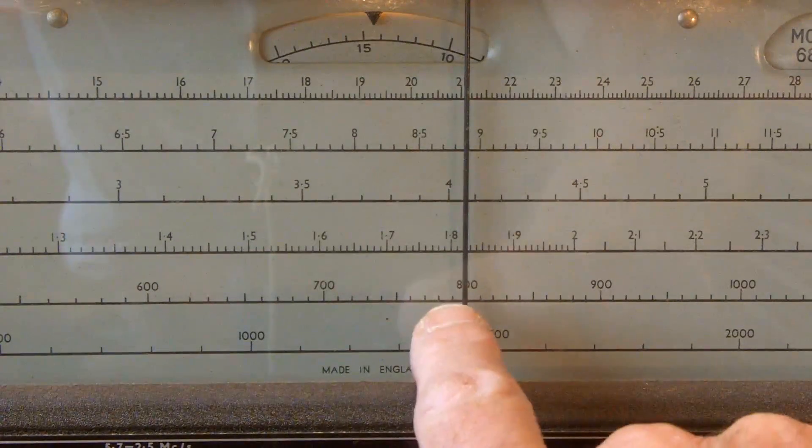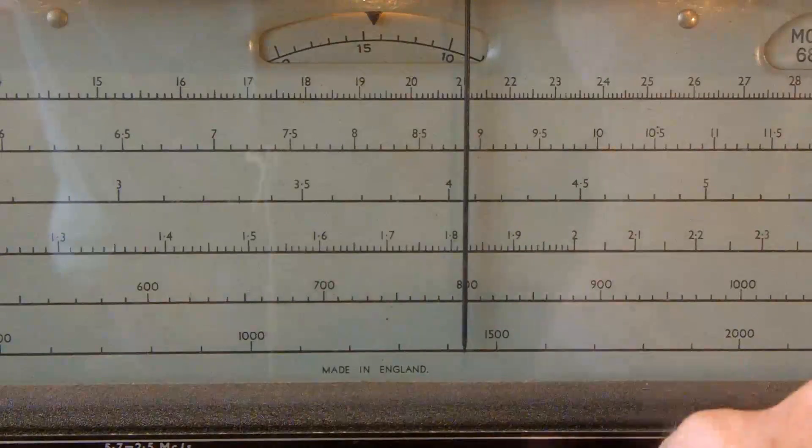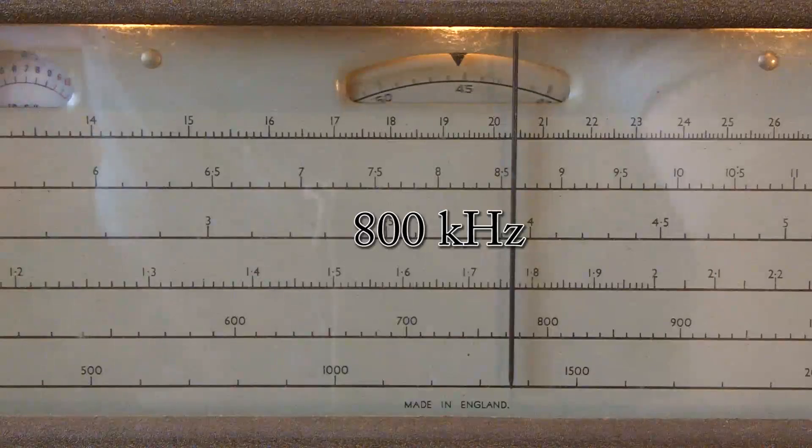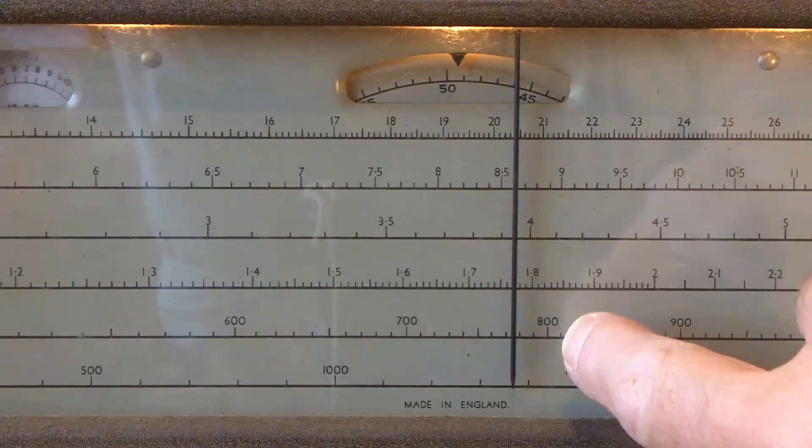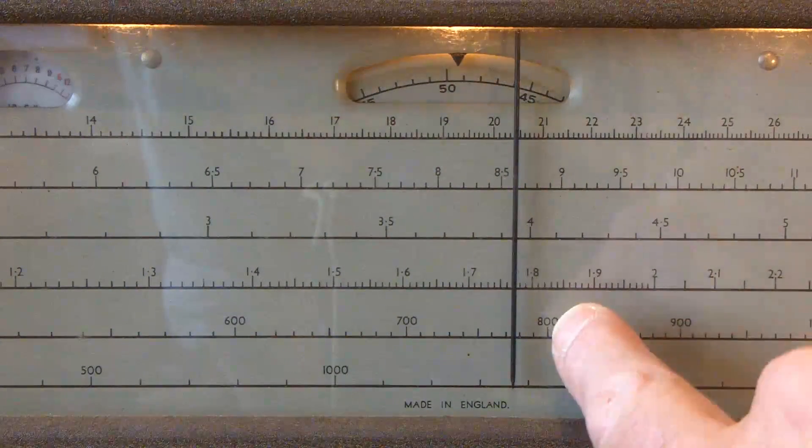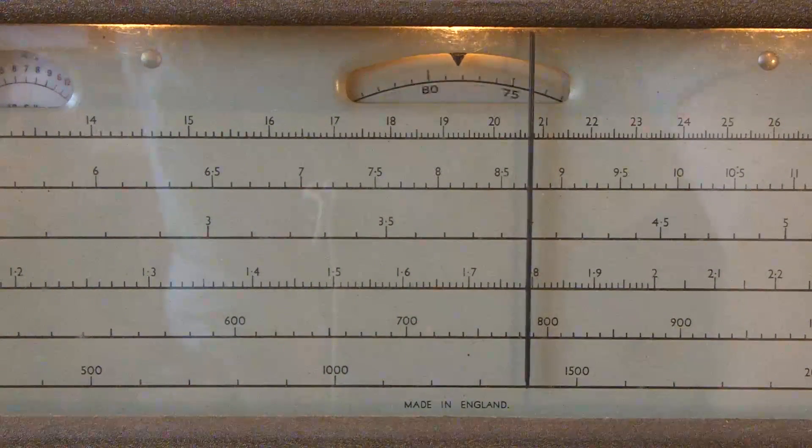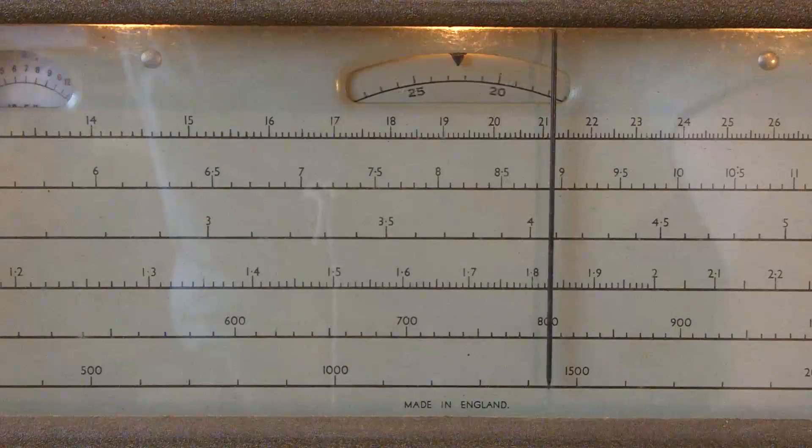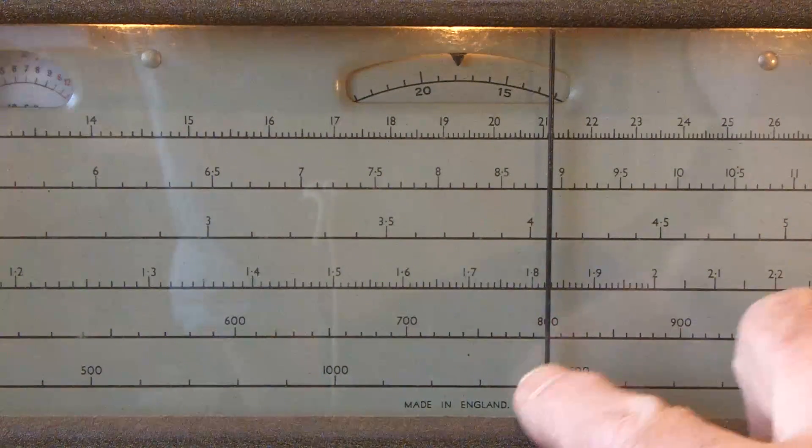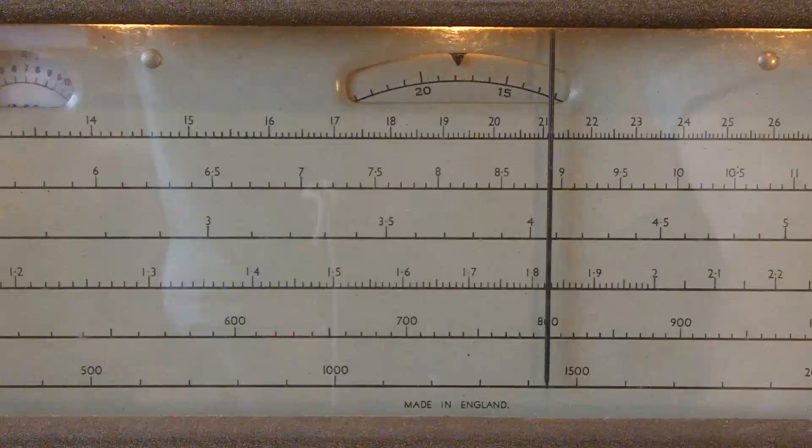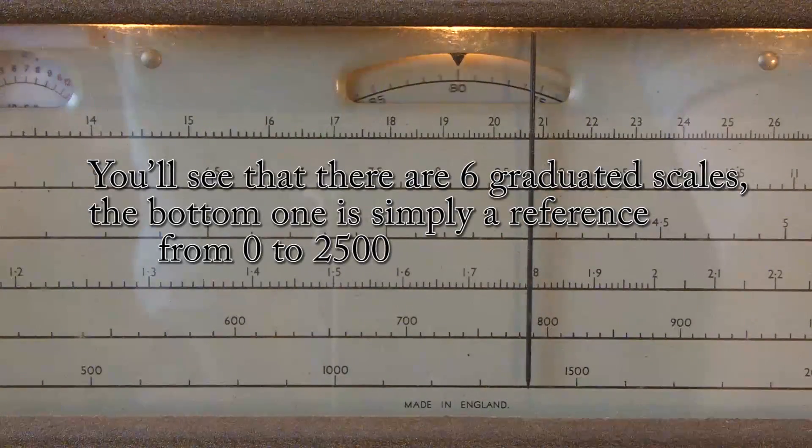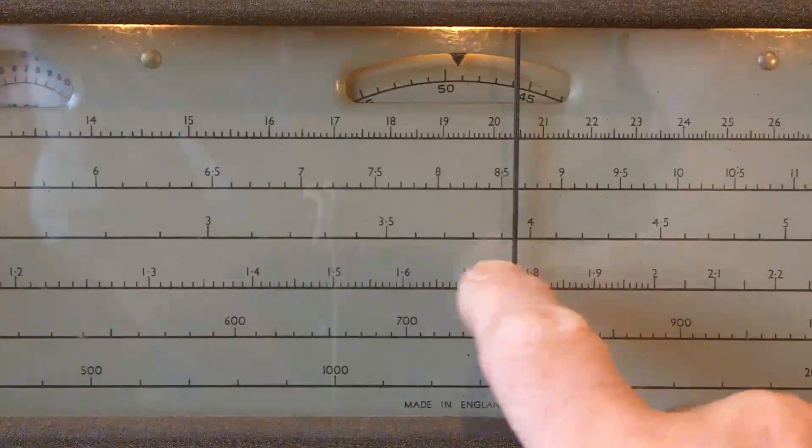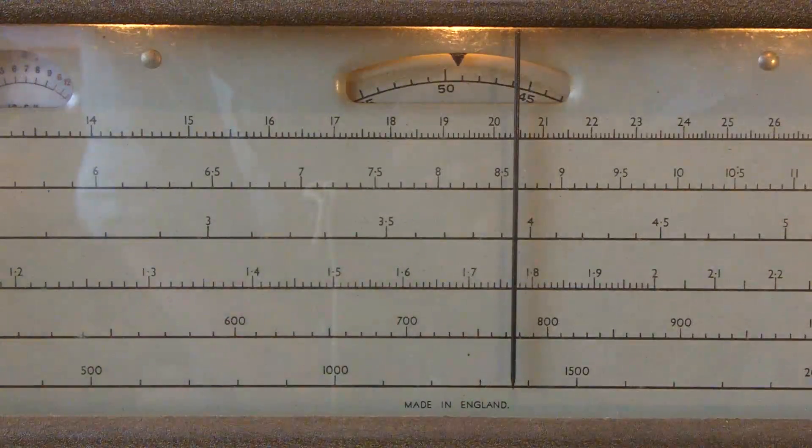So now I've got the signal generator set at 800 kilohertz. And that's on the line there. Okay, so that's what I've got at the moment. So it's this band 4 that I'm going to look at.